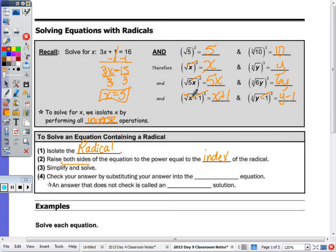So we raise both sides of the equation to the power equal to the index. And the index is just, again, the index for a square root is a 2, so that's why we square it. And the index for a cube root is a 3, so that's why we cube it. So they have to match or be the same number. Check your answer.